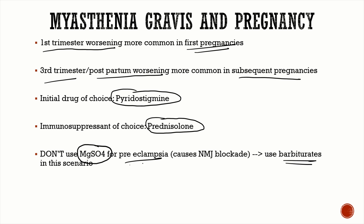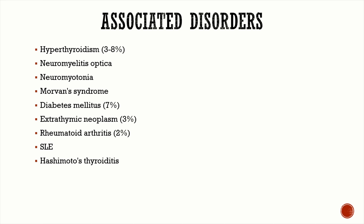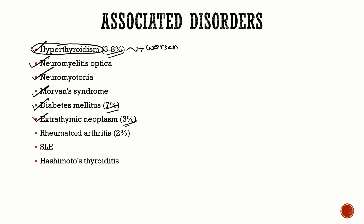Associated disorders include hyperthyroidism in 3–8% of patients, which can worsen myasthenic weakness. Other associations are Devic's disease, neuromyotonia, Morvan syndrome, diabetes mellitus (7%), extrathymic neoplasms (3%), rheumatoid arthritis (2%), and other autoimmune disorders like SLE and Hashimoto's thyroiditis.